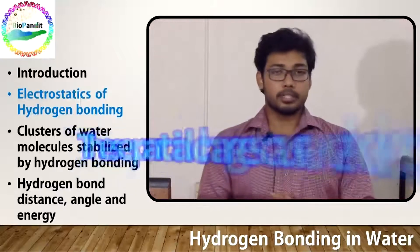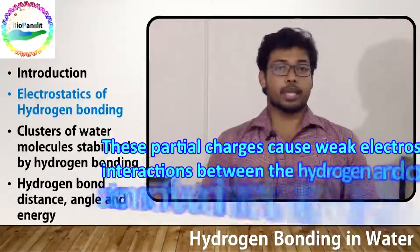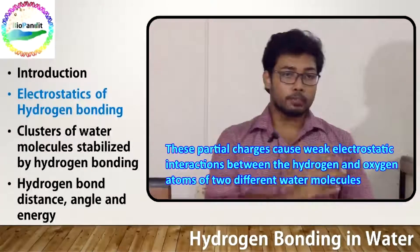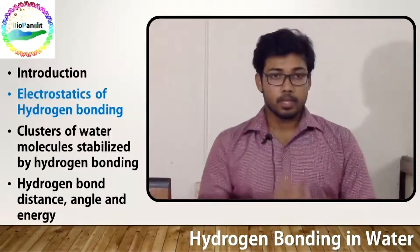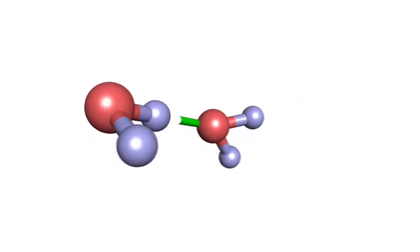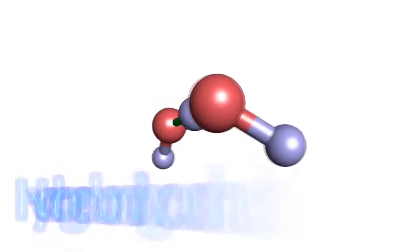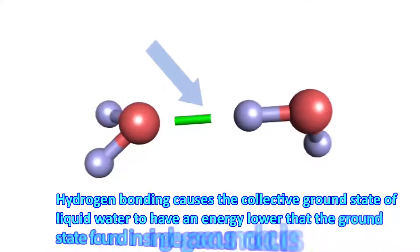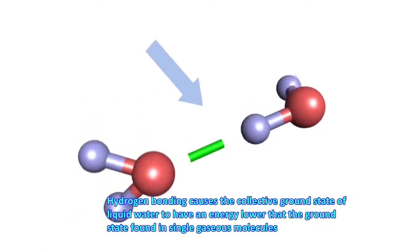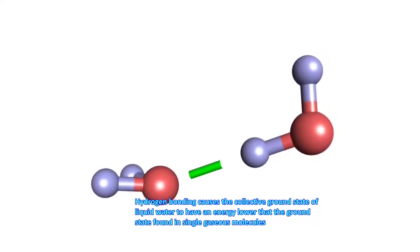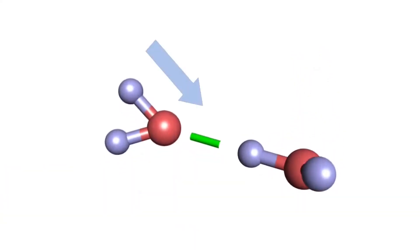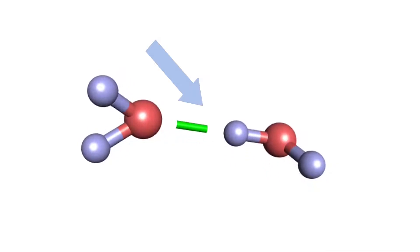These partial charges cause weak electrostatic interactions between the hydrogen and oxygen atoms of different water molecules. This weak electrostatic attraction is the basis of hydrogen bonds. Hydrogen bonding causes the collective ground state of liquid water to have an energy lower than the ground state found in a single gaseous molecule. Let me show you a hydrogen bond, which is highlighted in green here.